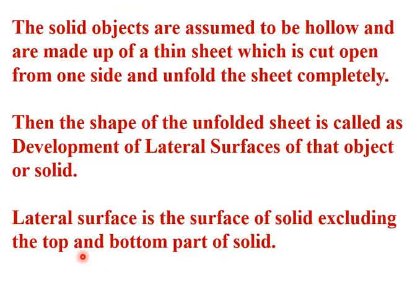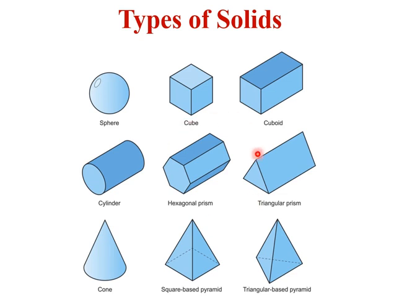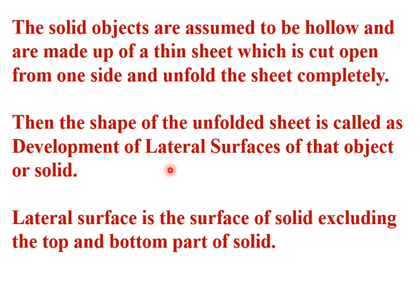One should know what is meant by a solid and what are the types of solids — already covered in classroom sessions. We have drawn the elevation, that is the front view, which is the orthographic projection of some solids. Now in development of lateral surfaces, the solid objects are assumed to be hollow and made of a thin sheet, so that it can be cut open from one side and unfolded. Whatever this unfolded sheet is laid out on a plane, it is known as the development of lateral surfaces of solids.